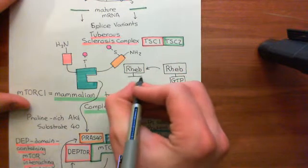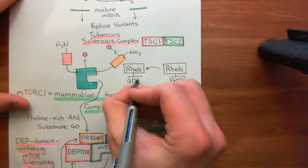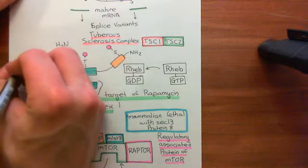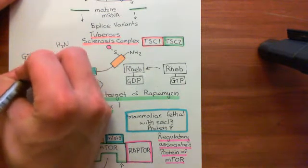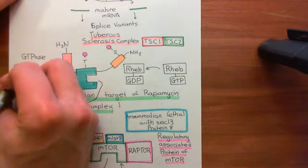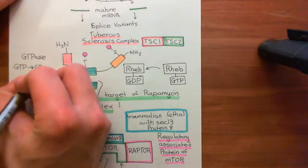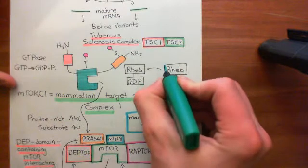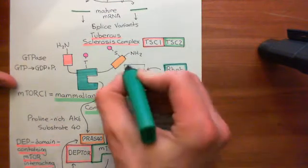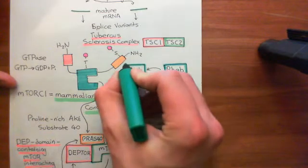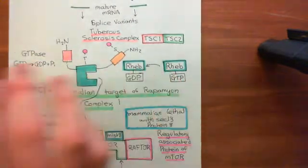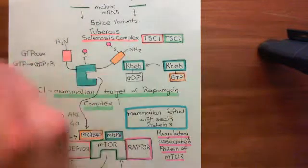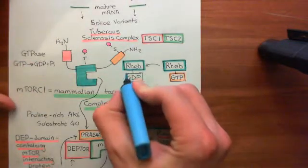RHEB itself is a GTPase. All monomeric G proteins and the alpha subunits of heterotrimeric G proteins are GTPase enzymes, which means they catalyze the hydrolysis of GTP to GDP and an inorganic phosphate. So basically, the RHEB protein is capable of turning itself off by hydrolyzing the GTP bound to it down to GDP.